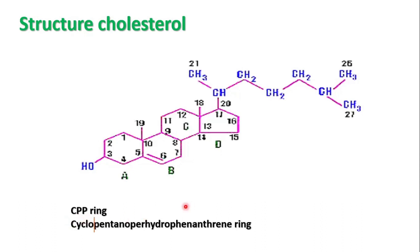CPP means cyclopentano perhydrophenanthrene ring. This is the CPP ring, also called the CPP nucleus, and sometimes it is written as 3P. This can be asked as an MCQ — the full form of CPP.